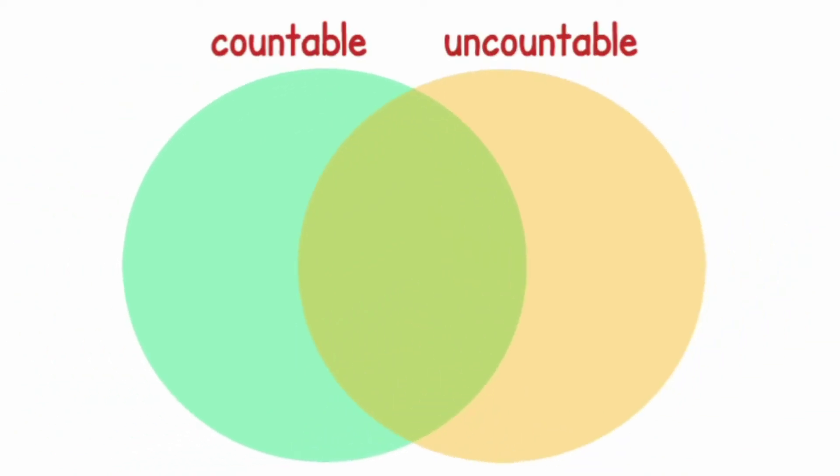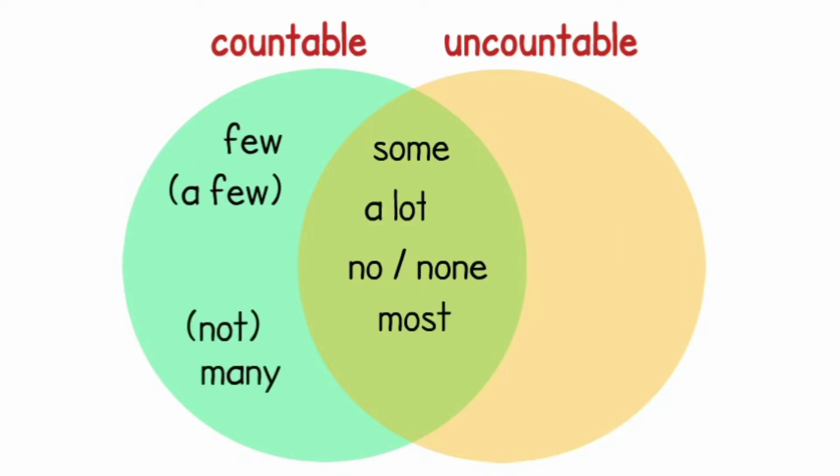For countable nouns you can use no, none, not much, little, a little, some, a lot of, all. For uncountable nouns you can use no, none, not much, little, a little, some, a lot of, all.